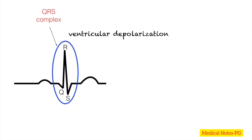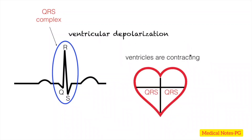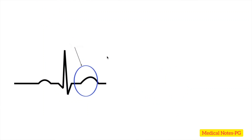The QRS complex represents ventricular depolarization — during ventricular depolarization, the ventricles are contracting. Remember: depolarization means contraction. The P wave is for the atria while QRS is for the ventricles. The QRS complex kind of looks like an inverted V — V for ventricles — so when you see a QRS complex, think ventricular depolarization.